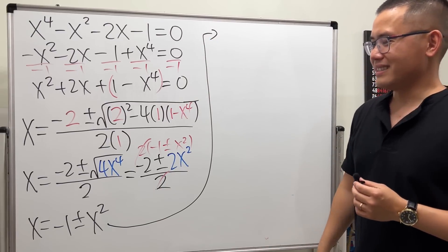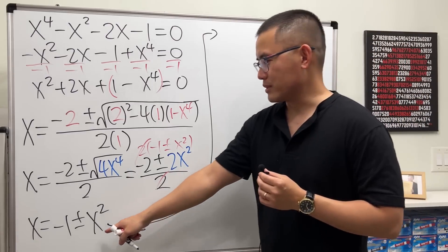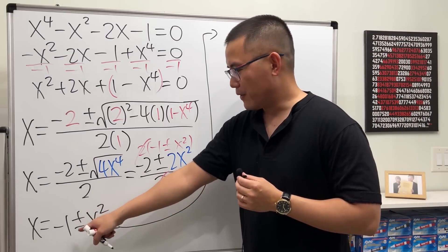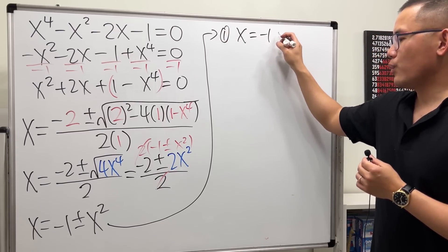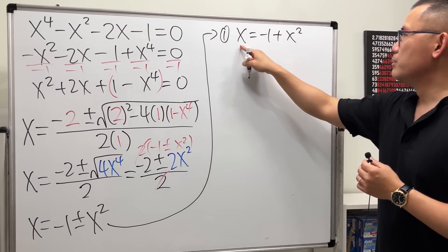And now, because we are doing quadratic formulas, so we'll use quadratic formula to solve these two equations. The first one is with the plus, so I'll just say number one: x equals negative 1 plus x square.